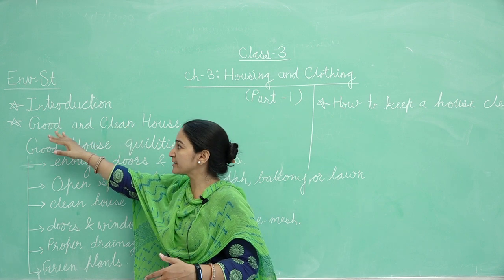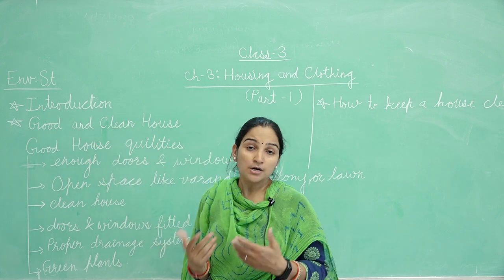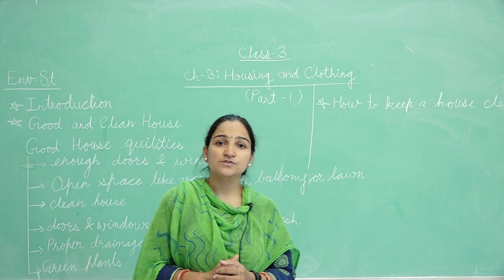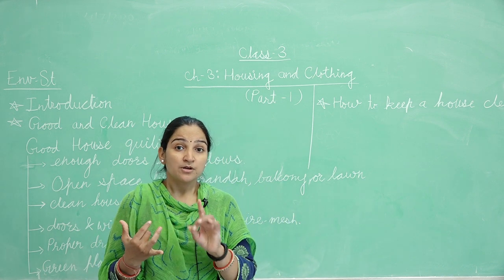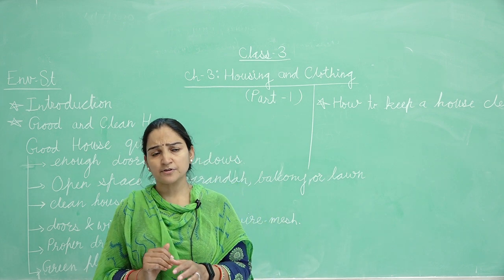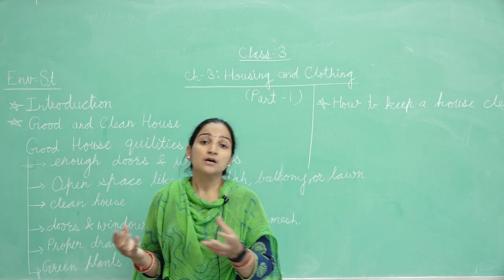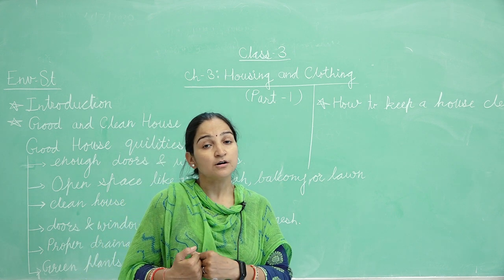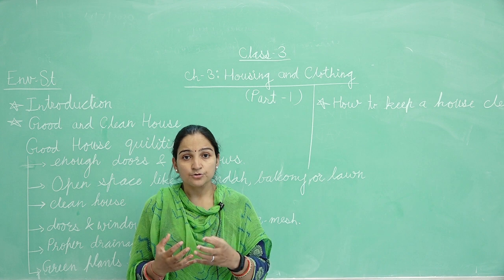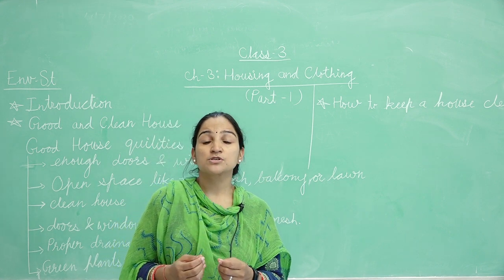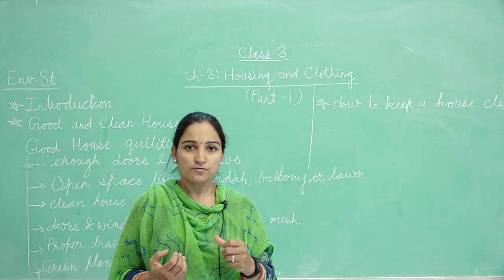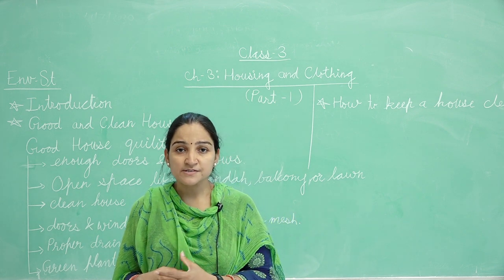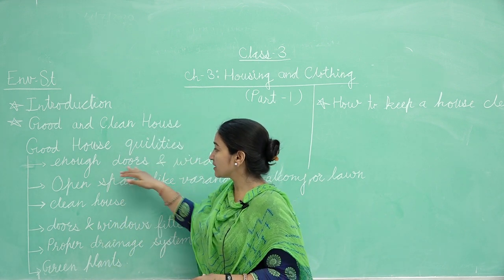Next topic is good and clean houses. What is a good house? We should know its qualities. So a good house has enough doors and windows — because air circulation, heat, sun's rays, and light should properly come inside the house. Sunlight has UV rays that kill small germs in our house, and fresh air is necessary for breathing. That is why we need enough doors and windows.